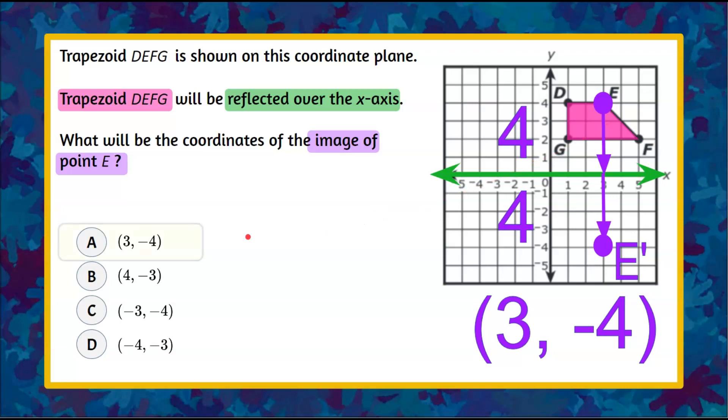So we can identify that answer choice A is point E, that vertex of the trapezoid, reflected in the x-axis.